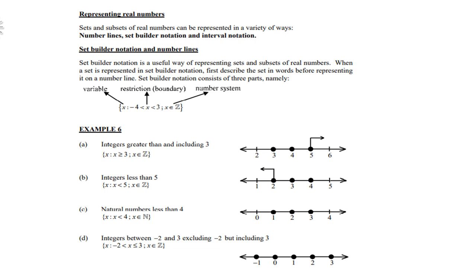Let's look at example 6. Integers greater than and including 3. So the variable is x, the restriction is x ≥ 3, and x is an element of the integers. If you look at the graph next to it, you can see 3, 4, 5, and the arrow means it goes to infinity. So 3 is the smallest, and then all the integers to the right.